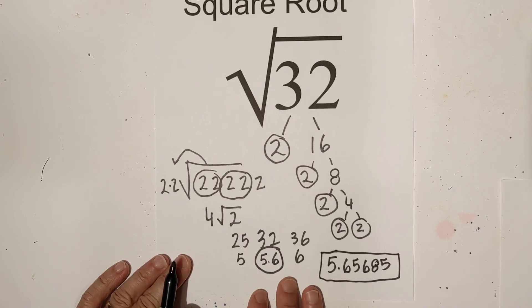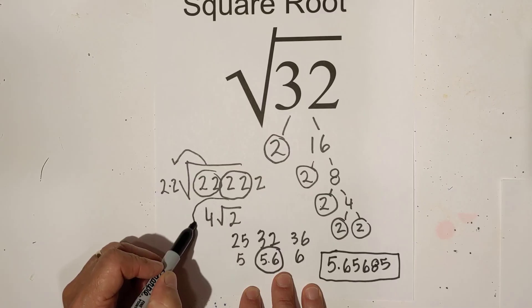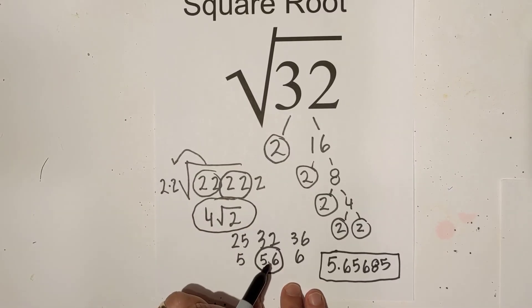I hope that helps. In summary, I'll go one more time. Simplified, it is 4 square root 2. If you want to estimate it, you have 5 on one side and 6 on the other.